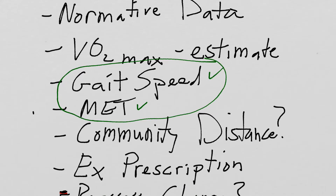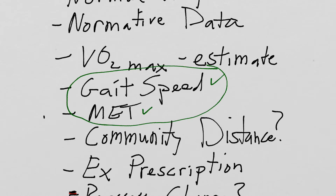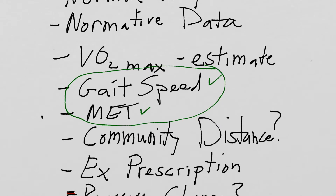You can determine whether someone walked community distance — maybe they covered only 500 feet, which gives insight into whether they'll be able to get back into the community. You can also use it for exercise prescription: research shows that 80% of someone's speed during the six-minute walk test is a great place to start them. And finally, you can reassess change by doing the test before and after therapy to determine what kind of improvement took place.